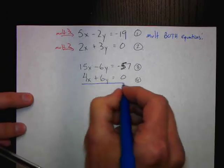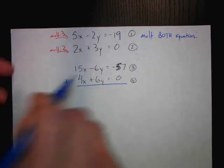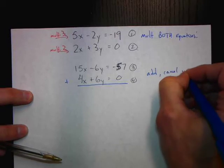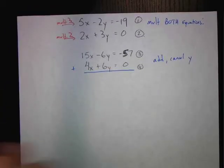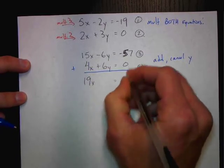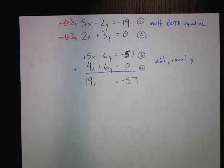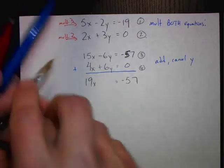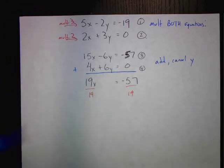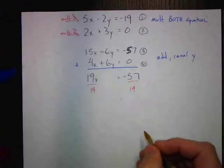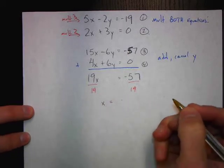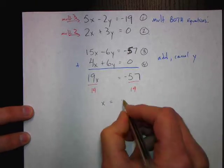Now I can add to cancel the y's. Adding equations 3 and 4: 15x plus 4x gives 19x, the y's cancel, and I get negative 57. To solve for x I divide both sides by 19, and it turns out that x equals negative 3.